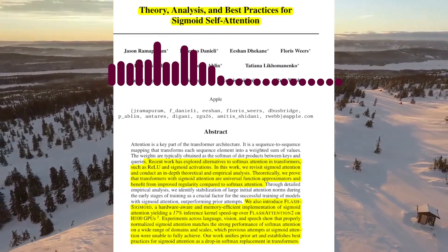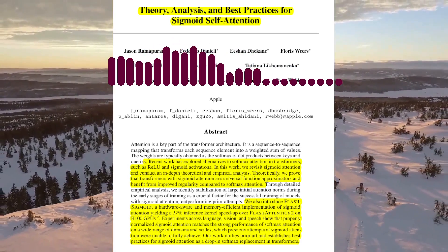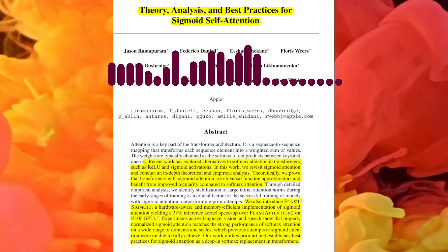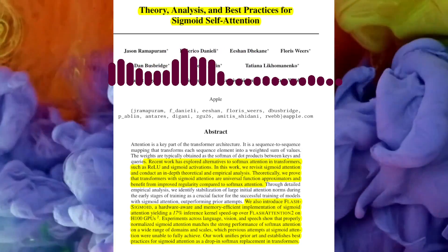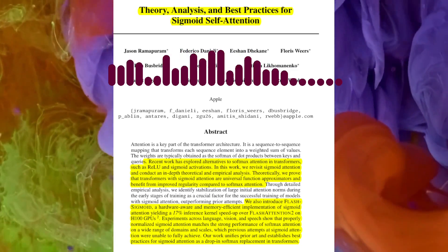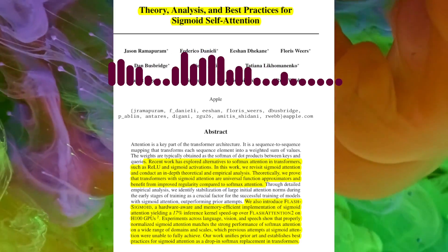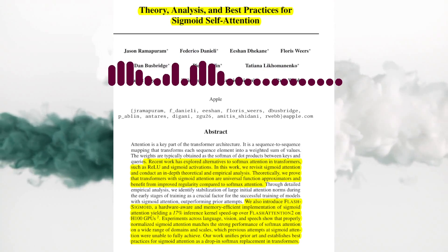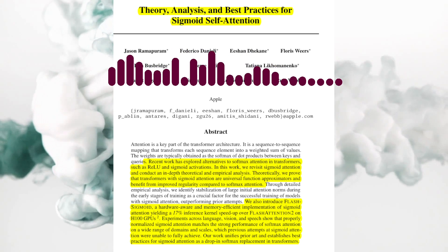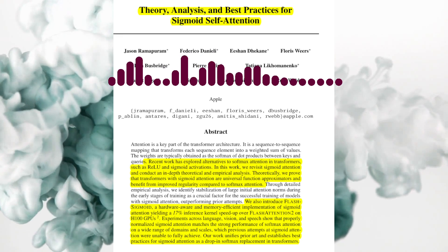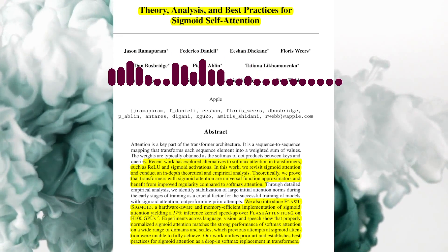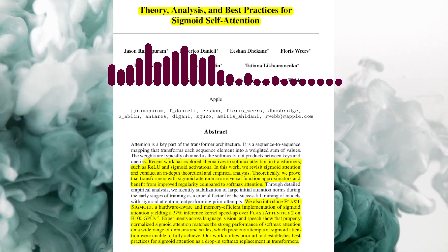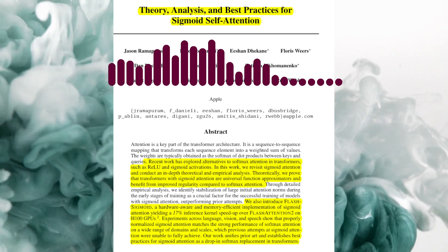Large initial attention norms can lead to instability during training. The authors propose two main solutions to mitigate this problem. First, they suggest using relative positional embeddings like ALiBi, which shifts the initial attention logit mass towards the zero regime under the sigmoid activation. Second, they propose setting the attention logit bias term to a negative offset proportional to the sequence length, an approach that allows for the use of other positional embedding techniques like RoPE. By addressing the issue of large initial attention norms, the authors are able to achieve stable training with sigmoid attention.